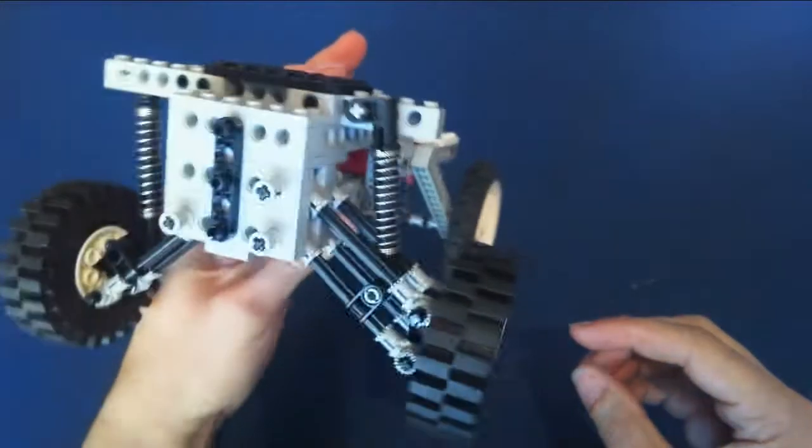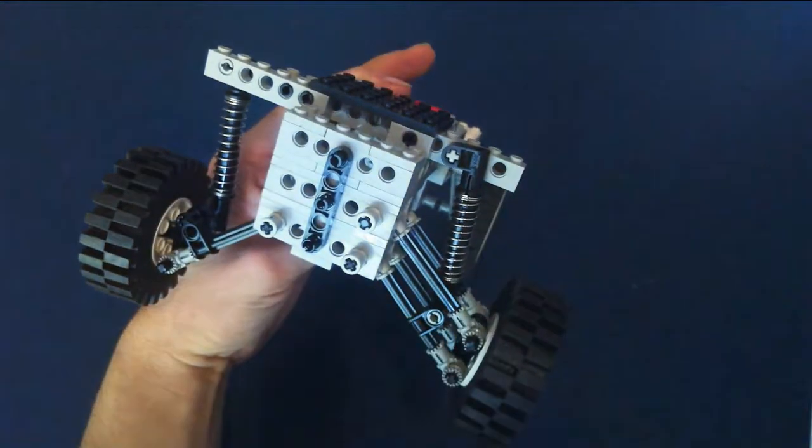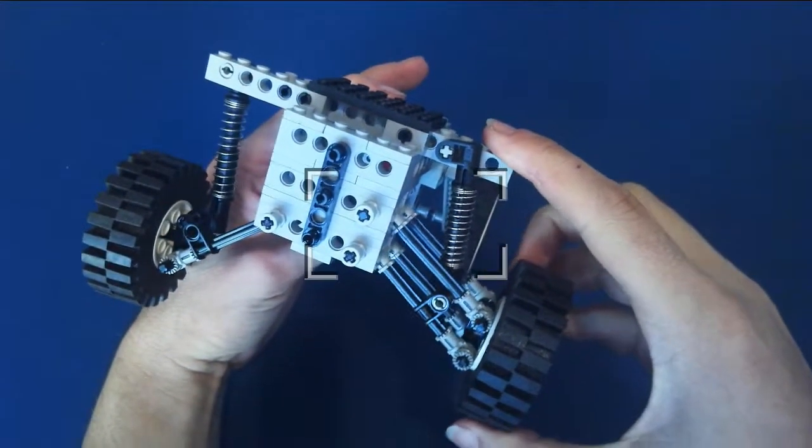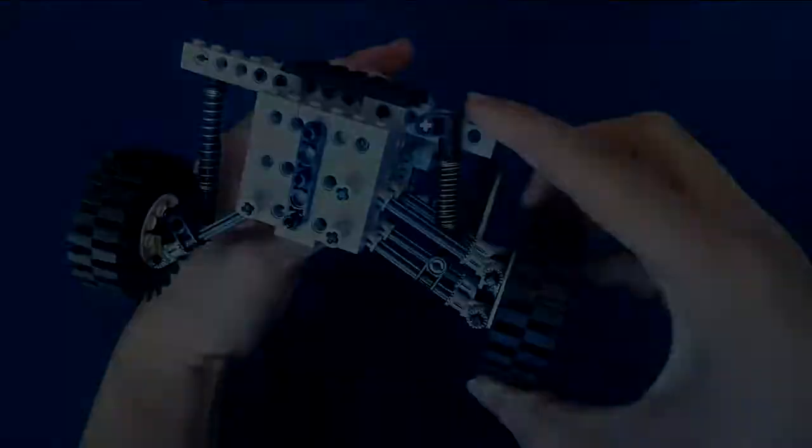On the right hand side we have a double wishbone setup. It has one and two control arms and the coil over strut is mounted to these. We can see when we articulate that the camber remains quite steady.